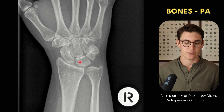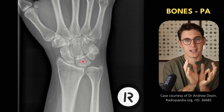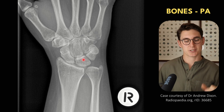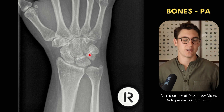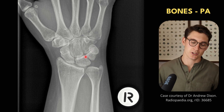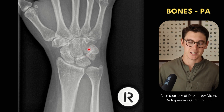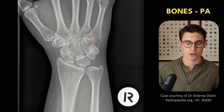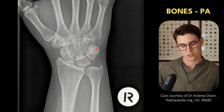Medial to our scaphoid is our lunate bone — lunate meaning moon shaped. On the lateral view, the lunate bone is crescent shaped and it actually cups the capitate above it. Then more medial to our lunate is our triquetrum, our three-cornered bone with its triangular shape. Just anterior to that triquetrum is our pisiform, which means P-shaped. It's technically a sesamoid bone lying within our flexor carpi ulnaris tendon, anterior to the triquetrum.